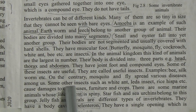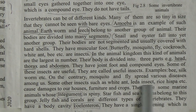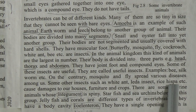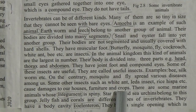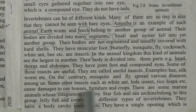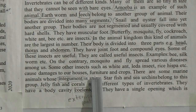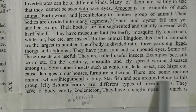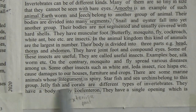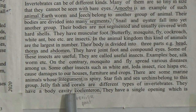Some insects are useful — examples are bees and silkworms. On the contrary, mosquitoes and flies spread various diseases. Some other insects such as white ants, leather insects, and rice hispa cause damage to our houses, furniture, and crops. There are some marine animals whose integument is spiny — starfish and sea urchins belong to this group. Jellyfish and coral are different types of invertebrates. They have a body cavity and a single opening used for both taking in food and expelling waste.